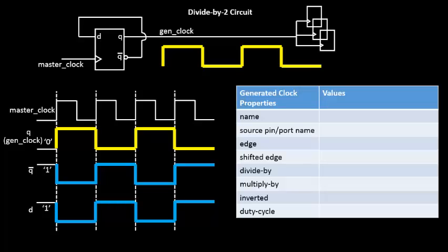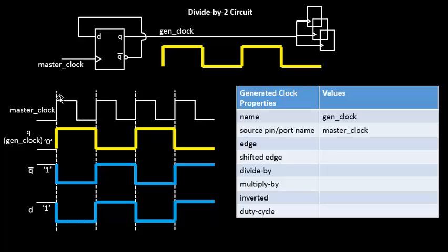To handle this, we use a special construct called a generated clock. The generated clock is derived from the master clock and is coded using specific syntax. The generated clock has a name — we call it 'gen_clock' — and a source, which is the master clock. Since the output waveform period is 2 nanoseconds versus the master clock's 1 nanosecond, this is a divide-by-2 clock.